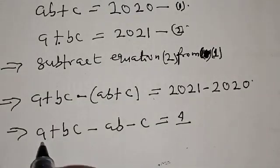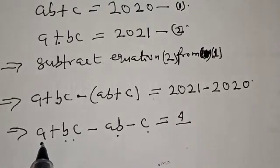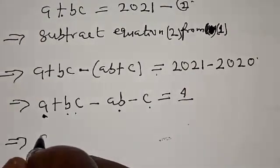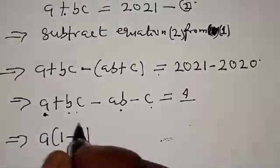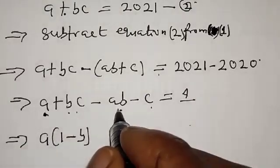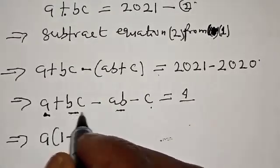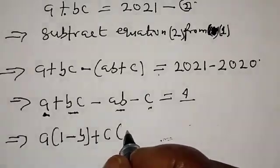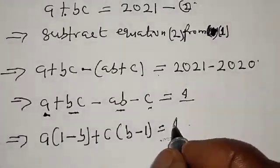This implies that we have A plus BC minus AB minus C equal to 1 — opening the bracket with the minus sign. From A and AB, we can factor A out. This implies that we have A into 1 minus B, since A is common from those two terms.